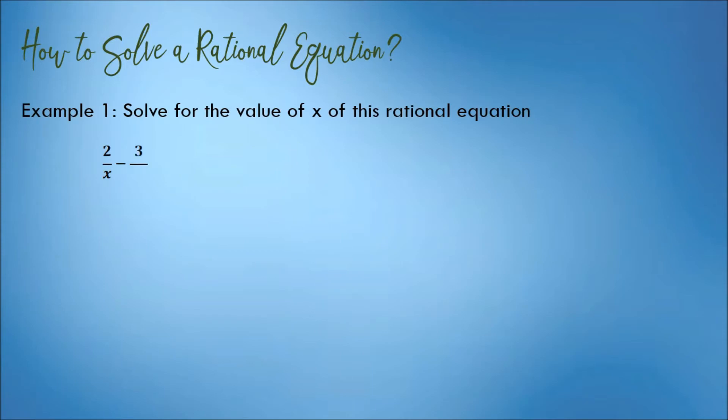For example, solve for the value of x of this rational equation: 2 over x minus 3 over 2x is equal to 1 fifth.